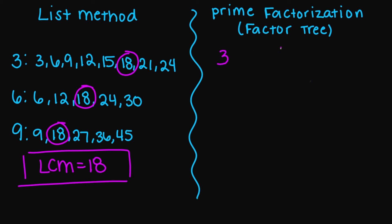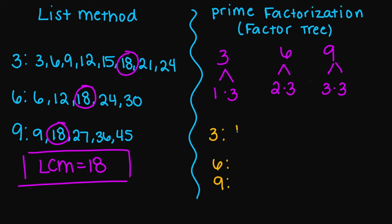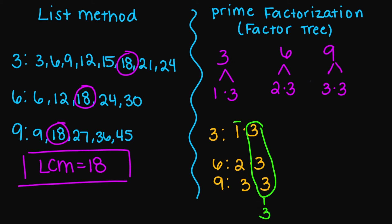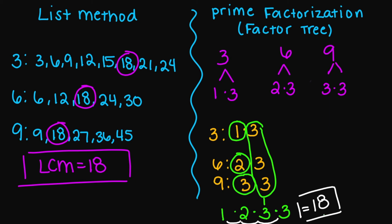So let's try the factor tree. My three factors into one times three. My six factors into two times three. And my nine factors into three times three. So listing: three is one times three, six is two times three, nine is three times three. I have a match — I can match all the threes. I write that three one time, and all the others are add-ons. So I add another three, a two, and a one. One times two is two, two times three is six, six times three gives you 18. So your LCM using this method is also 18.